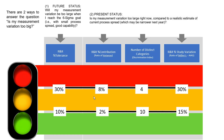Now let us go to Minitab and see how we can perform Gauge R&R. For that, you need three things in mind. One is the sample — you should have at least 10 parts. Number two is your operators — you should have a minimum of three operators, though two can work. And the third is the number of replicas — you should have two readings for each part.